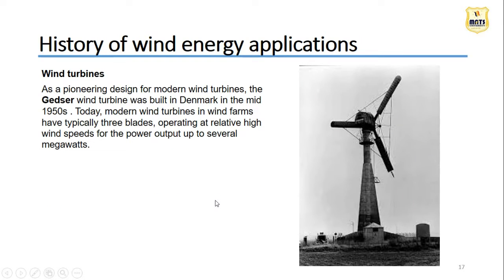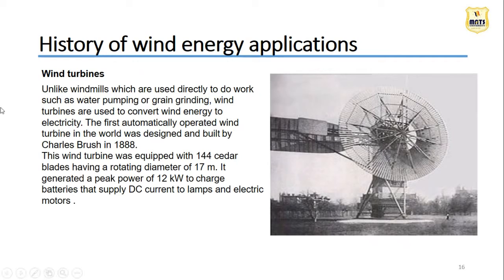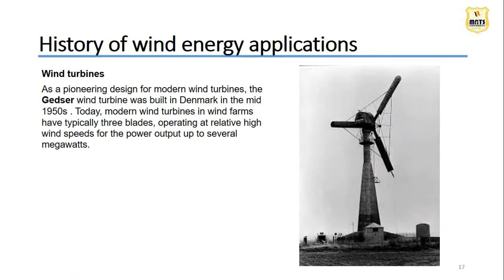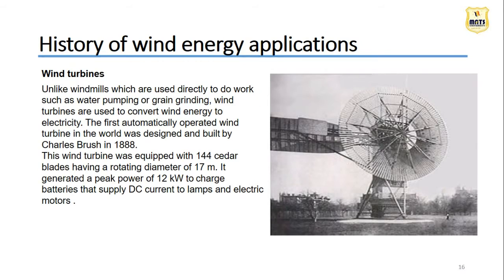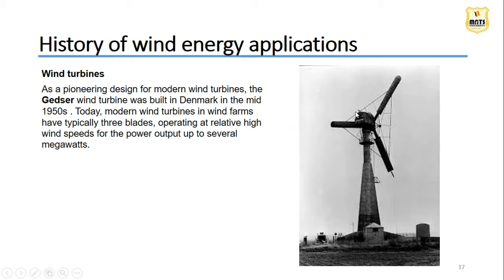Then it got its first three-bladed steel wind turbine in 1950 - 62 years of development from 1888 to 1950. Today the modern wind turbine with three blades comes from the Gauser wind turbine design, which is a three-bladed option. Many people have done a lot of work to develop and collect power from natural energy and apply it for daily human comfort. Gauser designed this wind turbine and made it operational in the 1950s.